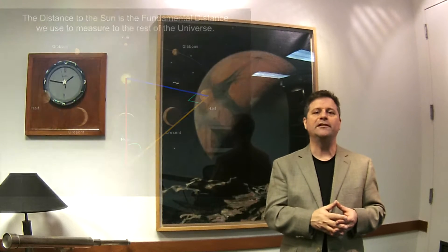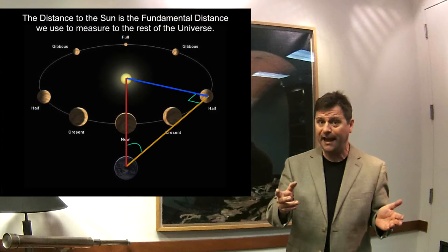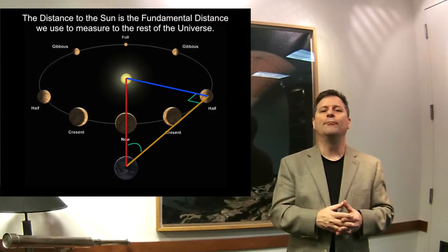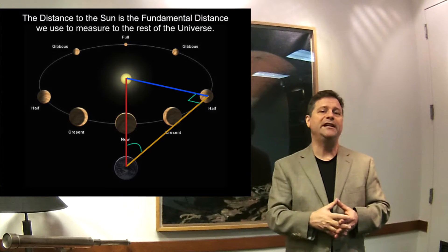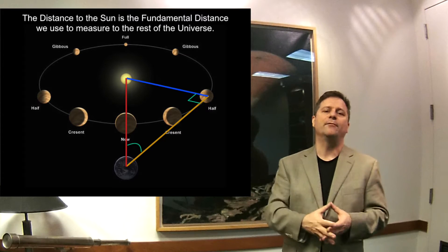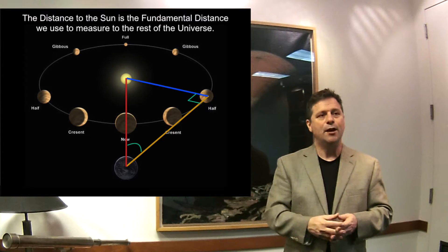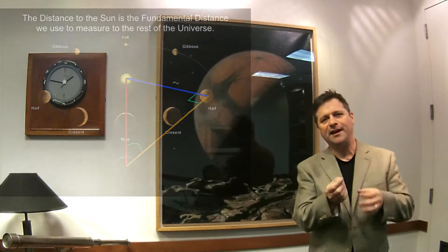I kind of glossed over it by saying that we look at the distance between the Earth and the Sun today by doing radar reflection off of Venus and using geometry in order to get that distance. But that's kind of a cop-out because we've known it for a lot longer than that, and in fact people have made good guesses as to the exact distance between the Earth and the Sun for a long time.